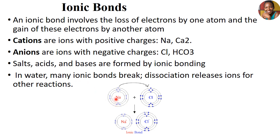Here's an example of the ionic bonding process: sodium loses an electron to become positively charged, and chloride gains the lost electron to become negatively charged. A bond holds these two together, forming sodium chloride — sodium is the cation and chloride is the anion. The atom that loses becomes positively charged (cation) and the atom that gains becomes negatively charged (anion).